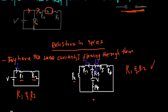Now looking at R3 and R4: current I1 flows through R3 and then R4 with no other current flowing through them. The voltage source causes current to start and then split — some going left, some going right — but only current I1 flows through R3 and R4, so R3 and R4 are in series.